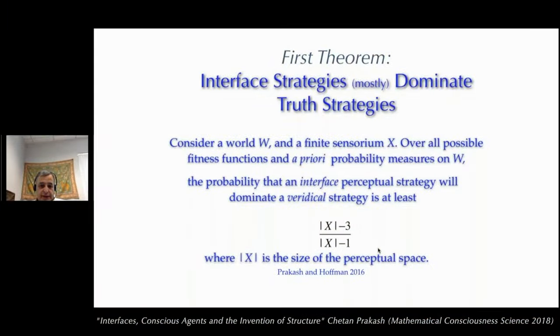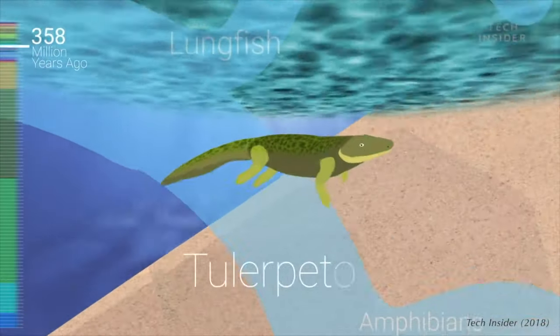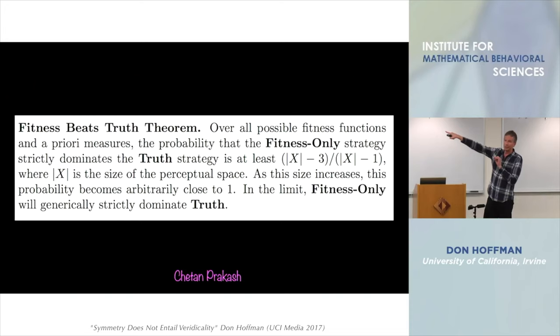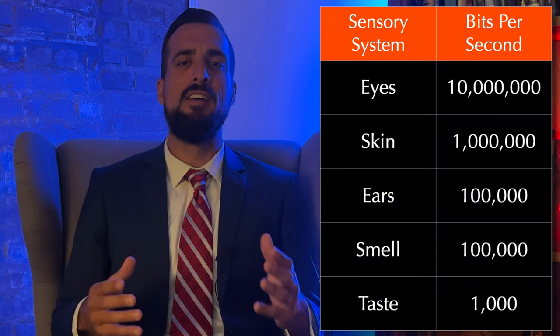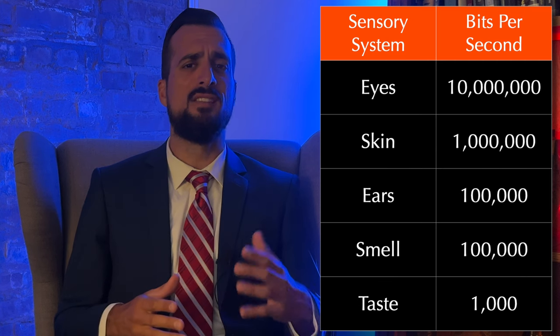In Hoffman's model, it turns out that after just 30 perceptual states, the fitness-only strategy wins at least 93% of the time, and truth goes extinct. Chaitan Prakash formally proved this mathematically: over all possible fitness functions and a priori measures, the probability that the fitness-only strategy strictly dominates the truth strategy is at least (cardinal X minus 3) over (cardinal X minus 1), where cardinal of X is the size of the perceptual space. As the size increases, the probability becomes arbitrarily close to 1. In the limit, fitness-only will generically strictly dominate truth. Consider that just our five basic senses send 11 million bits of information every second to the brain for processing. As Hoffman puts it, truth never even gets a chance to get on the stage.